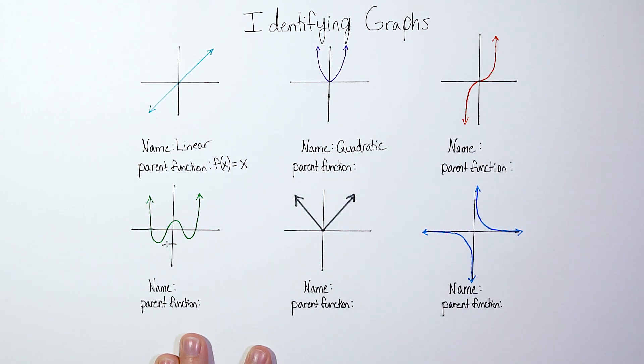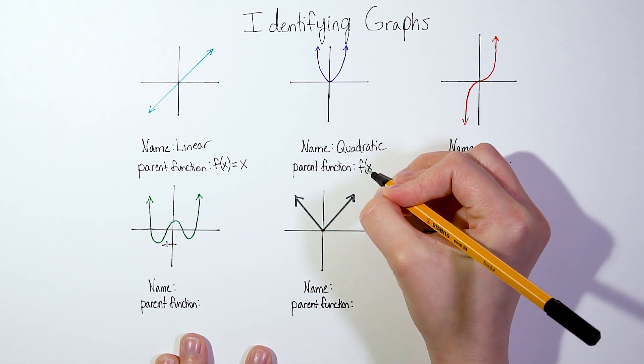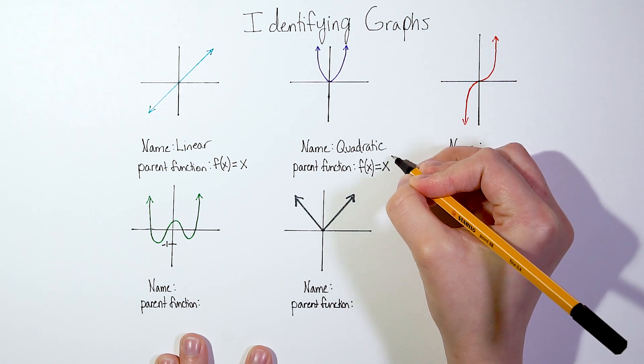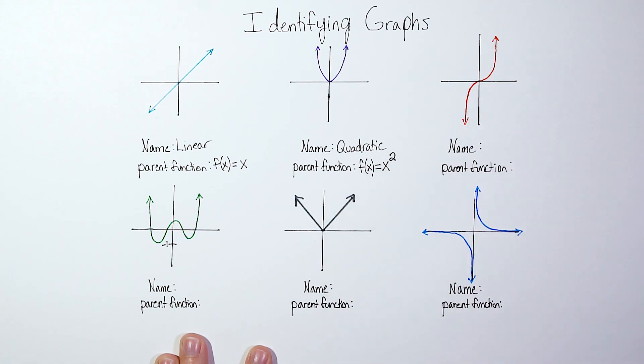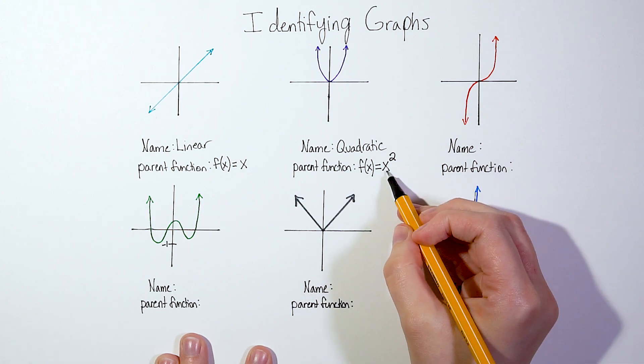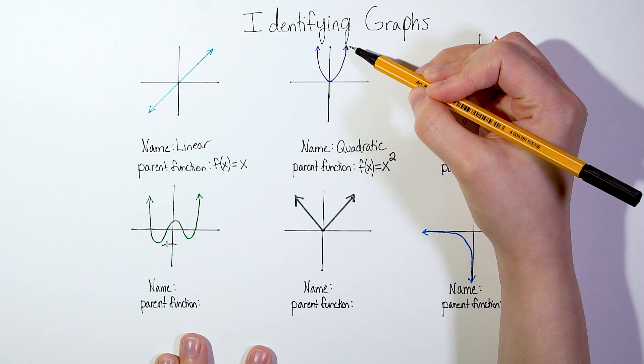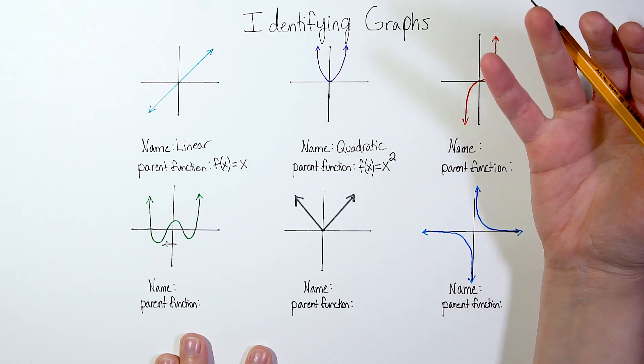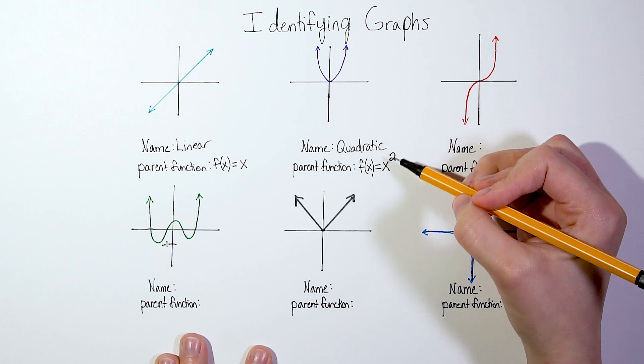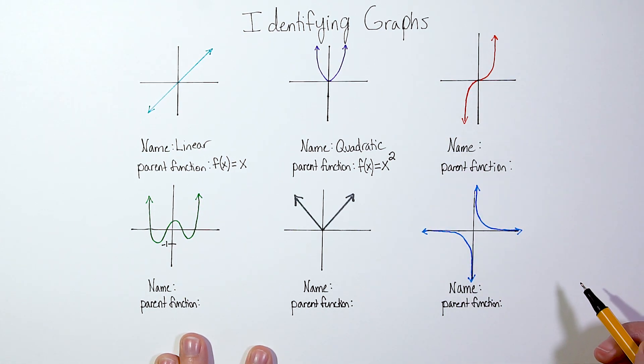It's a quadratic function. And our parent function for a quadratic would be f(x) or y = x². So again, we can tack on other things to that x² to change the shape of this graph in all kinds of different ways. We can do various transformations to it. But the basic parent function is x². f(x) = x².